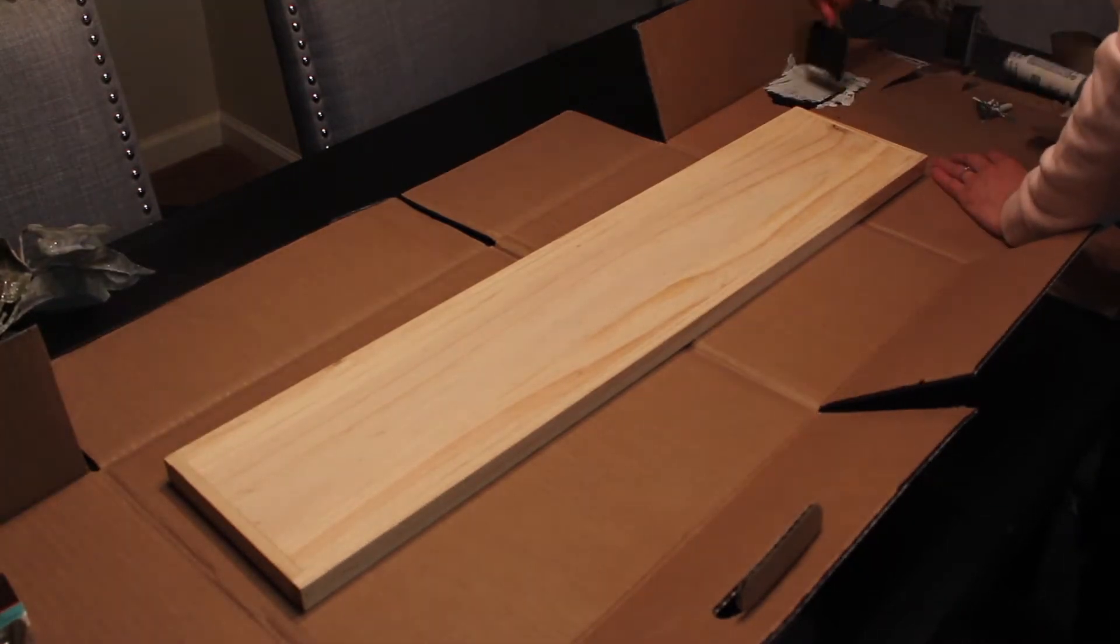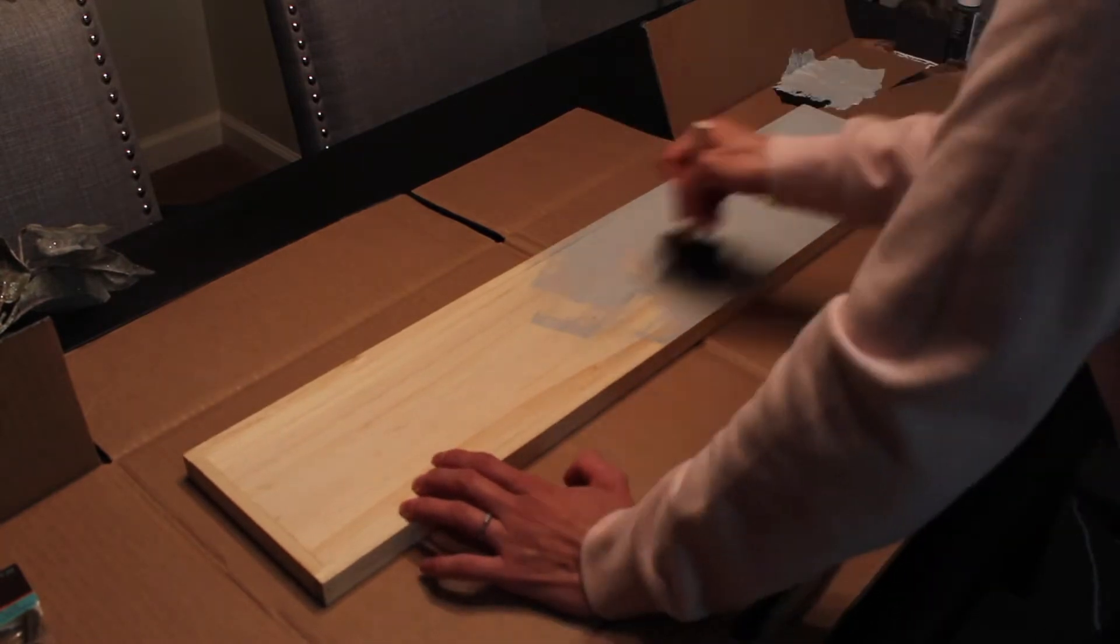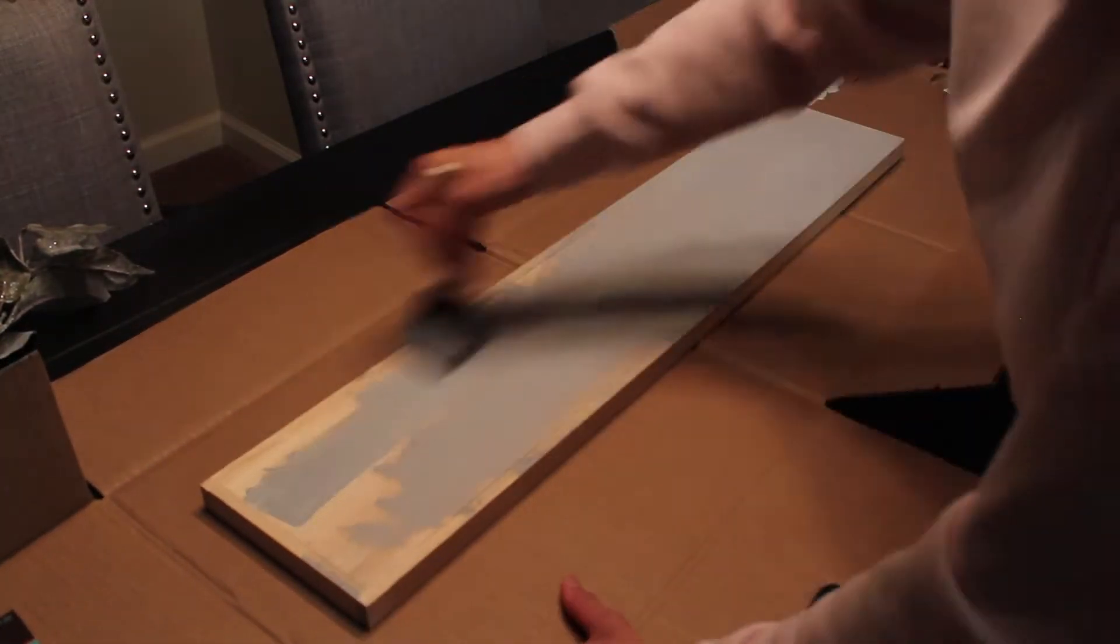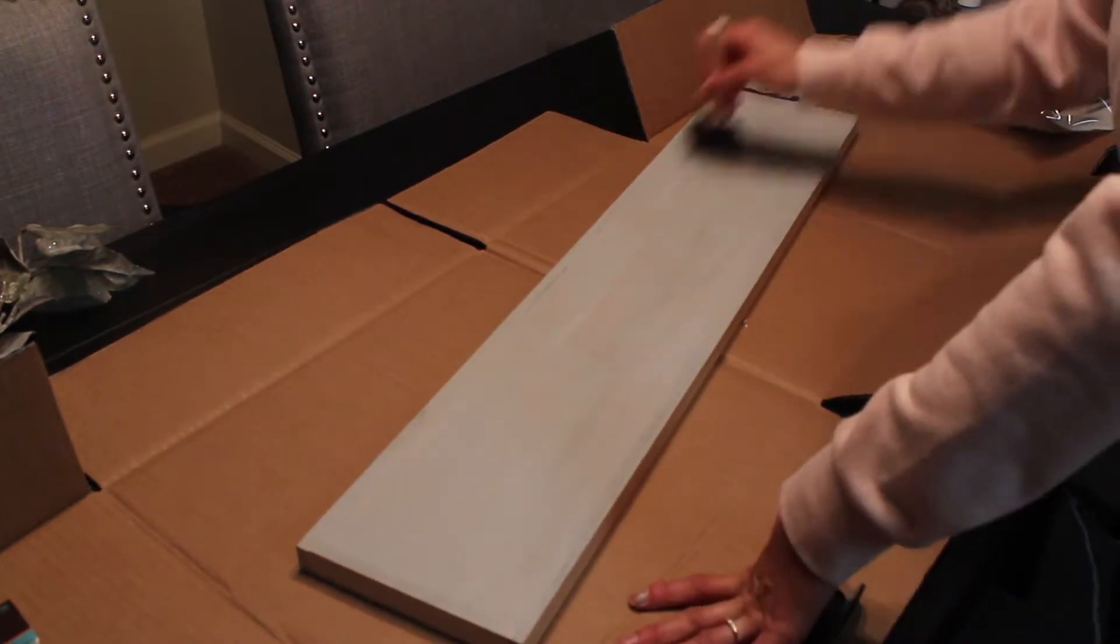Now I'm putting a really thin coat on because I want some of that wood grain to show through. I don't want it to be just a solid opaque gray and you'll see once I'm all done it looks really nice with just that thin coat of paint.